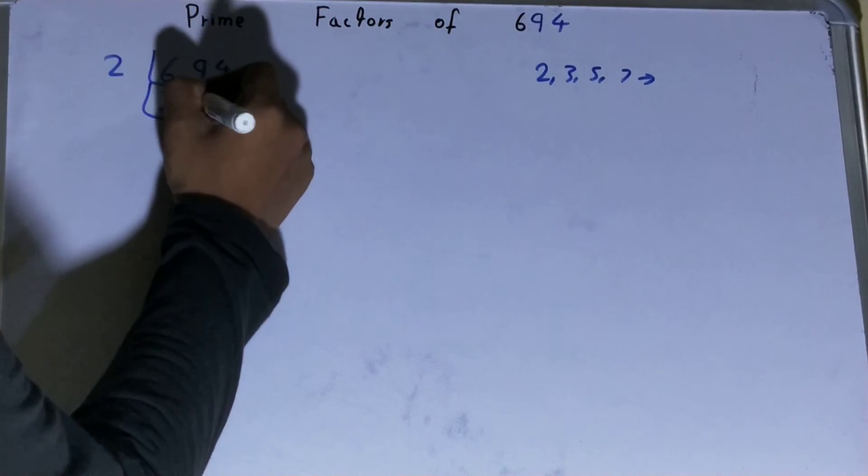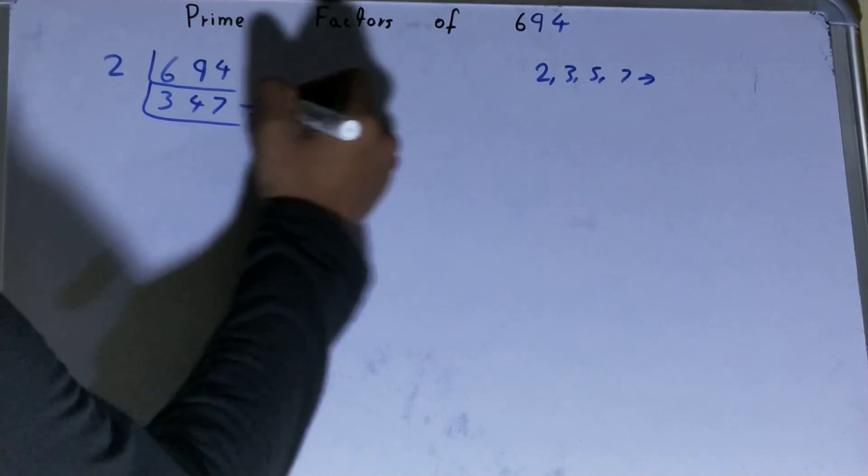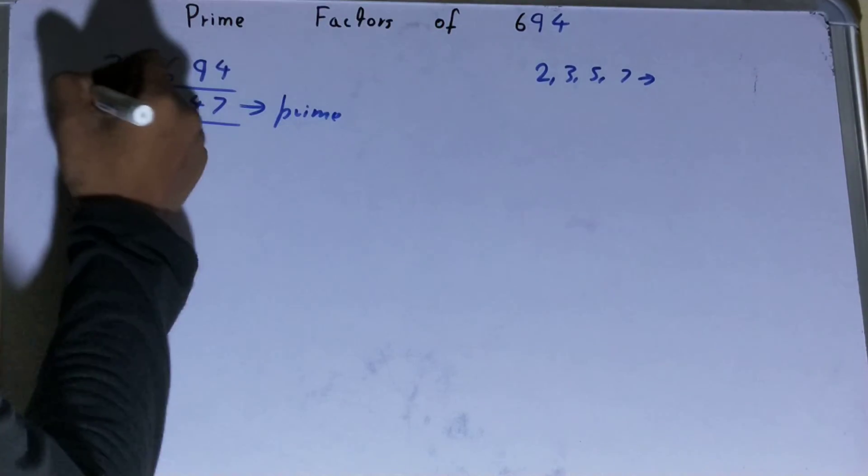Right, now is this 347 further divisible by 2? The answer is no. It is an odd number, and on that, it is also a prime number. So 347 is only divisible by itself.